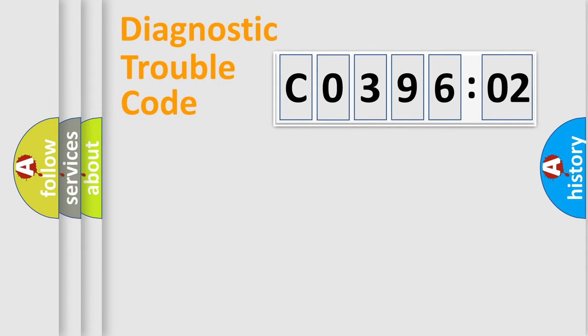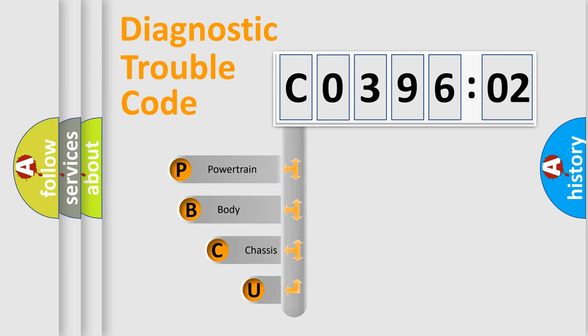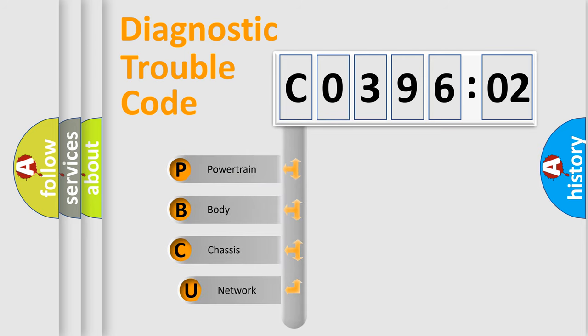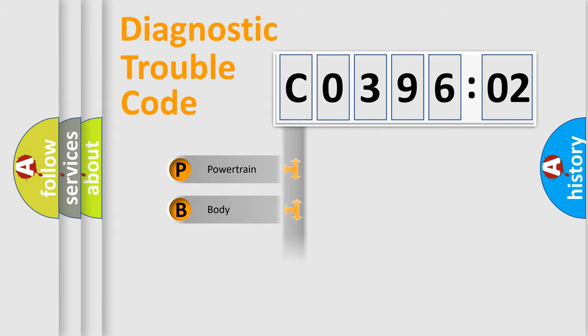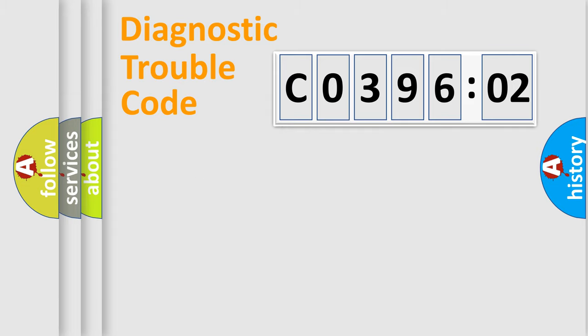Let's do this. First, let's look at the history of diagnostic fault code composition according to the OBD2 protocol, which is unified for all automakers since 2000. We divide the electric system of an automobile into four basic units: Powertrain, Body, Chassis, and Network.